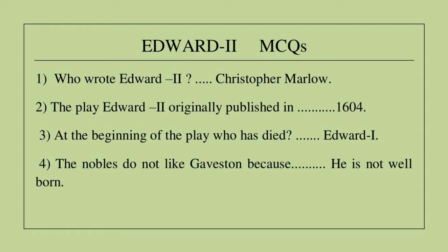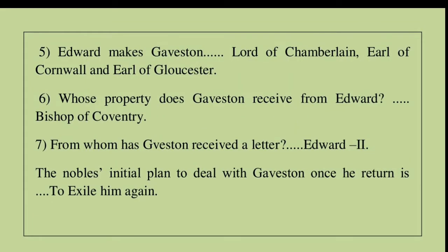Question 4: The nobles do not like Gaveston because he is not well born. Question 5: Edward makes Gaveston Lord of Chamberlain, Earl of Cornwall, and Earl of Gloucester. Question 6: Whose property does Gaveston receive from Edward? The answer is the Bishop of Coventry.